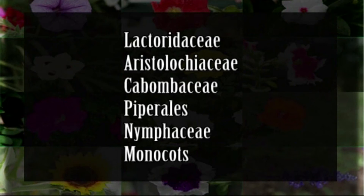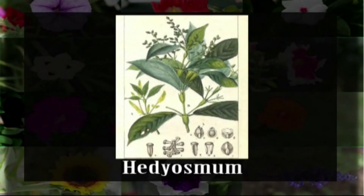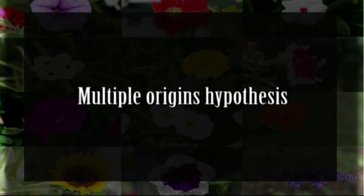Another theory is the Chloranthoid Hypothesis. This hypothesis suggests that flowering plants evolved from chloranthoid ancestors not unlike the modern angiosperm family Chloranthaceae. Arguments presented by Stacy in 2004 in favor of Leroy's proposal include reports of data from molecular systematics that place Hedyosmum in a clade basal to other extant angiosperms.